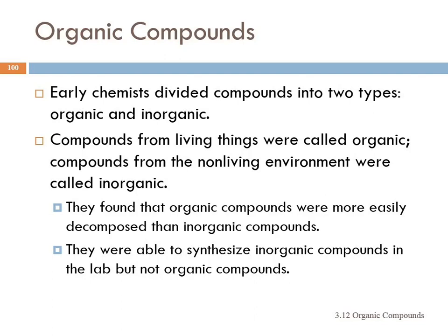The early chemists divided chemicals into two groups, organic and inorganic. The compounds that came from living organisms were called organic, and those from non-living things from the environment were called inorganic.